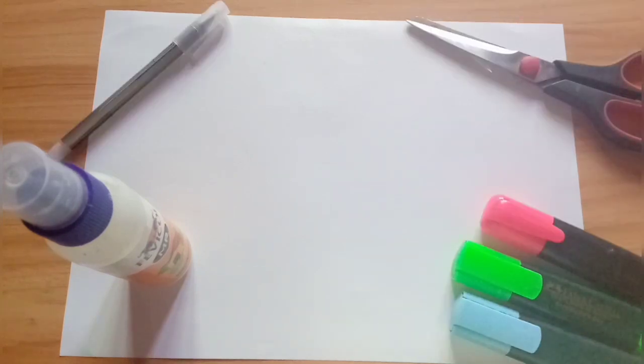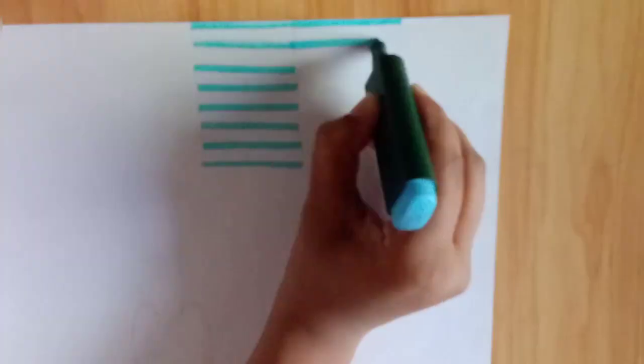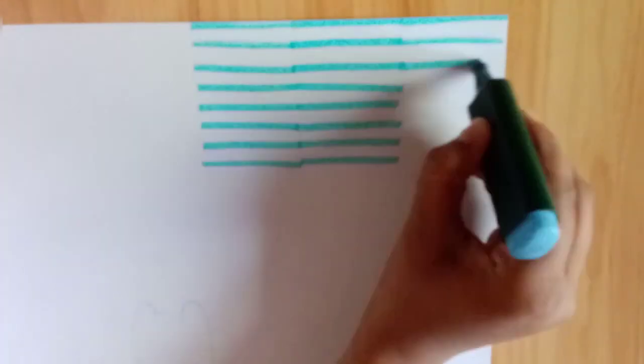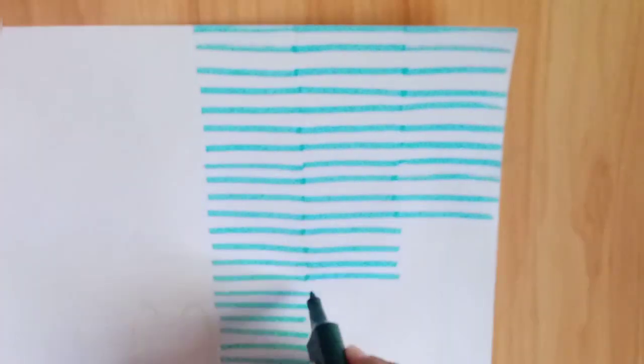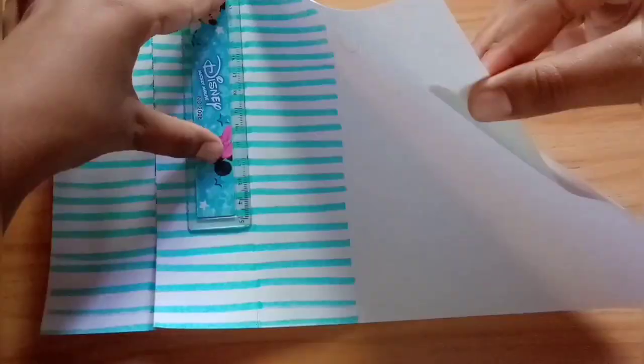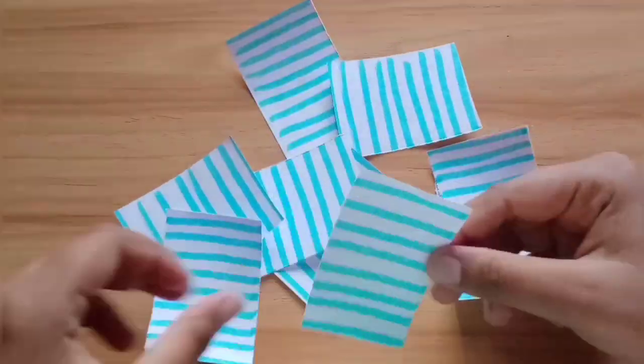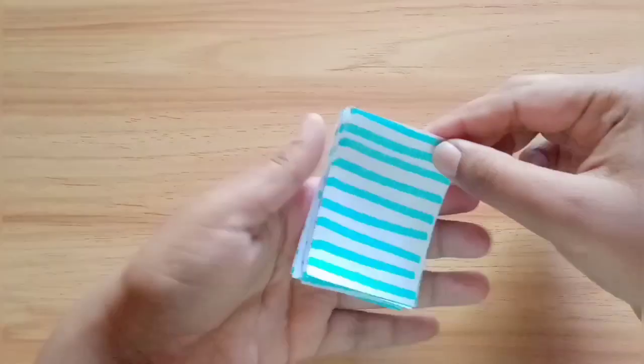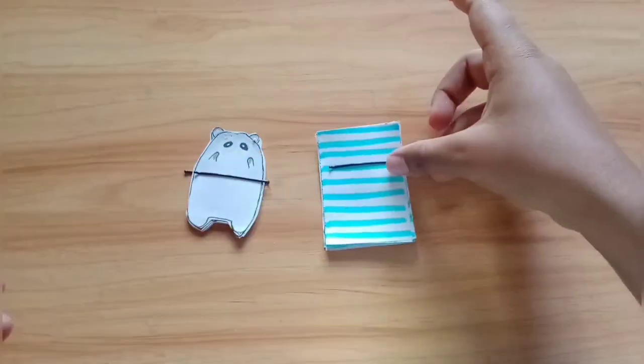Number three is memo pads. For this you'll need paper, glue stick, scissors, highlighters, and a pen. First, let's start with simple notepads. Draw some lines with a highlighter or brush pen, then cut them into small equal pieces. Collect them together and add glue on top. You can use a clip to hold it in shape.